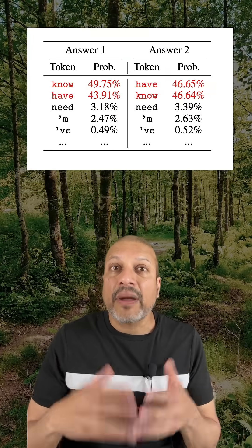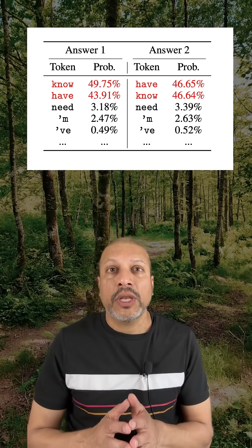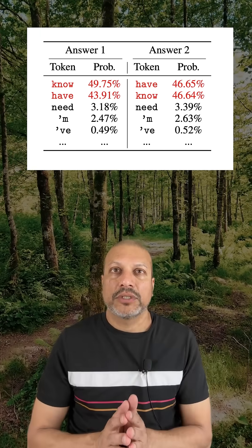Here you'll see that even if I'm asking the model to predict the next token, after just a couple of tokens you start to see that divergence.